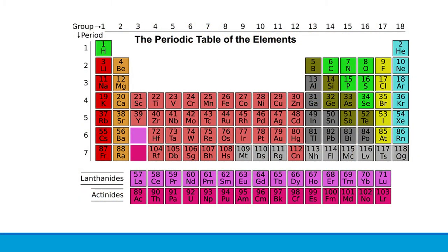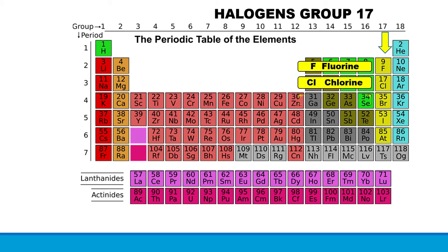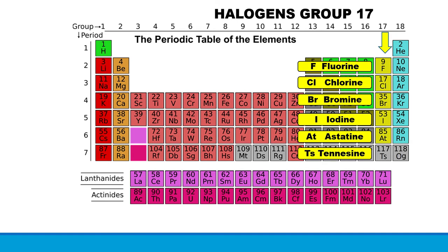In this video we will learn about Group 17 elements, also known as halogens. Halogens are located at the 17th column of the periodic table and the elements consist of fluorine, chlorine, bromine, iodine, astatine, and tennessine. Since this is a beginner's guide video, I will be focusing on four main elements in the halogens group, which are fluorine, chlorine, bromine, and iodine.